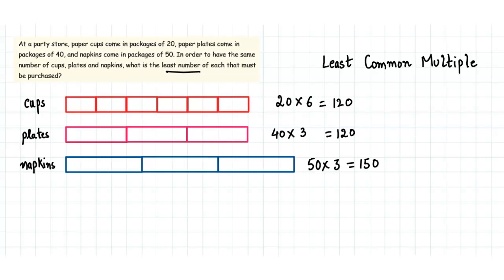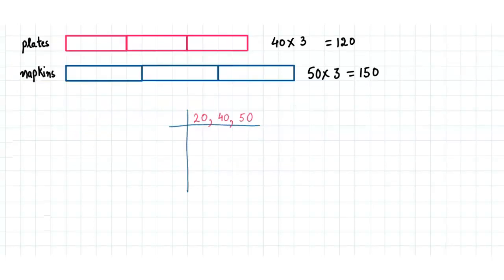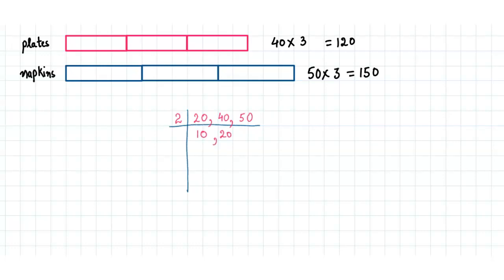So that means we need to find out the least common multiple of these three. So let's do that. So here we go. The first prime number which is common is 2, so we have 10, 20, and 25. The next prime number which is common is 5, so we have 2, 4, and 5.